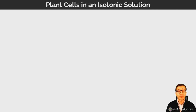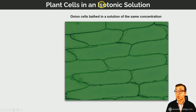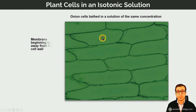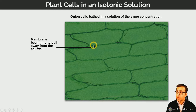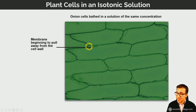An isotonic solution contains the same number of dissolved particles per unit volume as the cell contents, and therefore the same number of water molecules per unit volume. When these same cells are immersed in an isotonic solution, the membrane just begins to pull away from the cell walls, because there is no longer a net movement of water into the cells — you start to see a little plasmolysis.